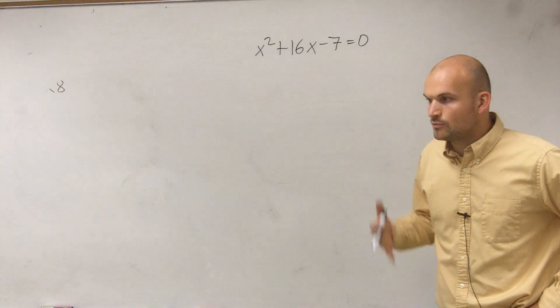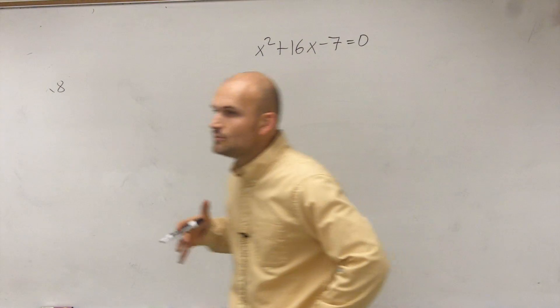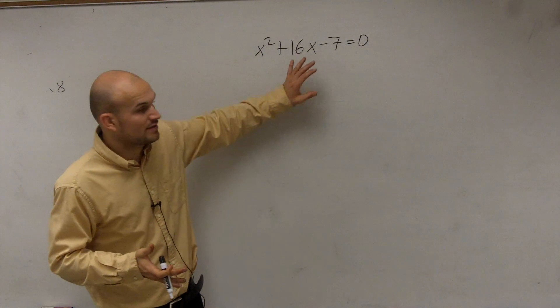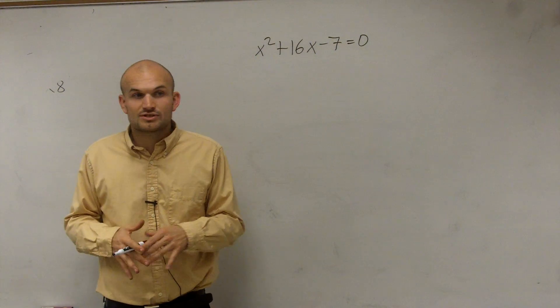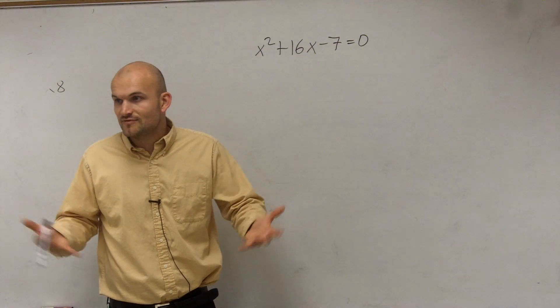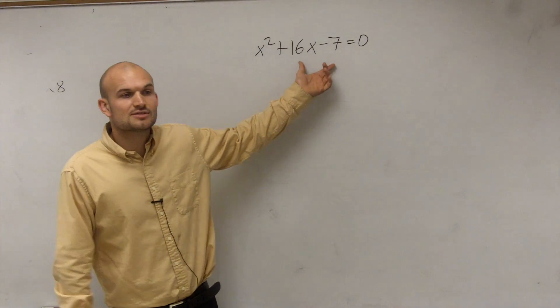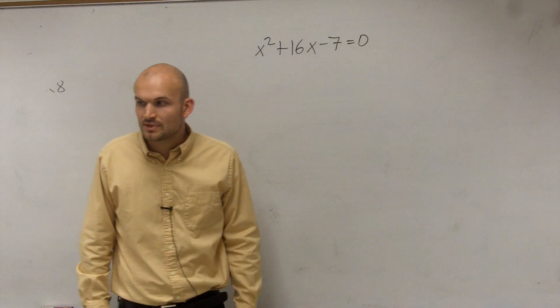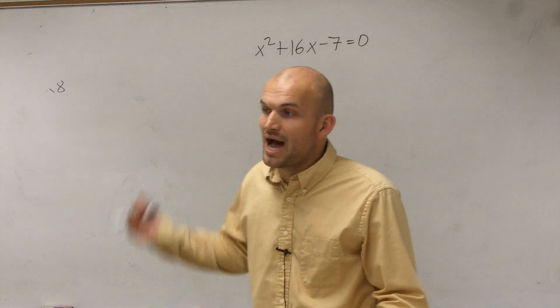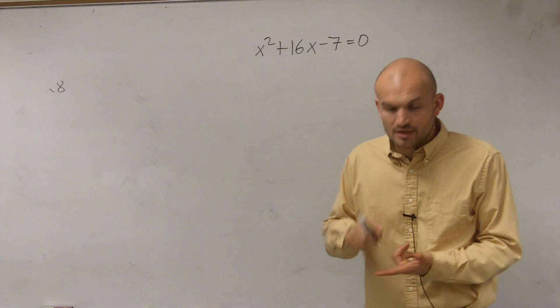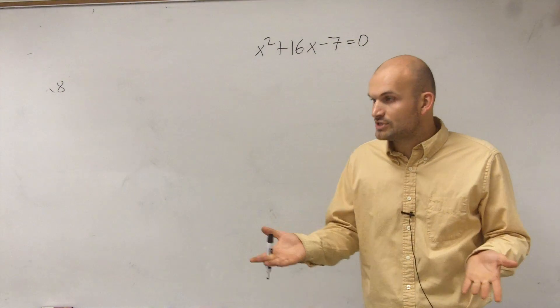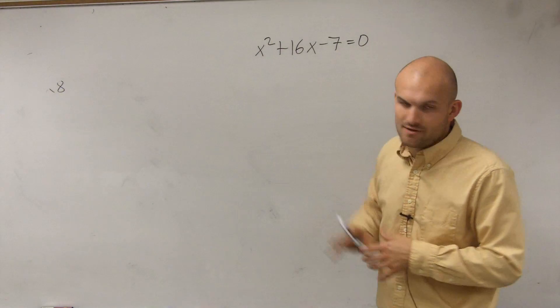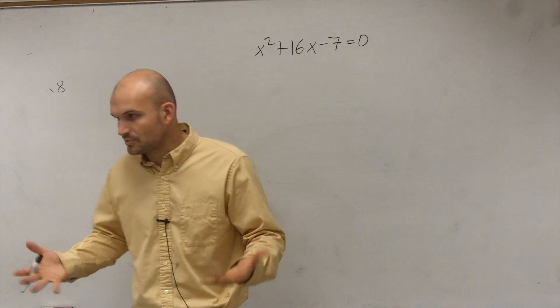So, the first thing that we want to do, ladies and gentlemen, when we complete the square - the reason why we're completing the square is a lot of times when we're trying to solve, the first thing I've always told you guys to do is try to solve by factoring. We've practiced factoring over and over. But you look at this problem, this is not factorable. There's no two numbers that multiply to give you 7 that add to give you 16. So, how else can you solve this problem? How else can you find the values for x? You can do that by completing the square or by what we just learned, quadratic formula.